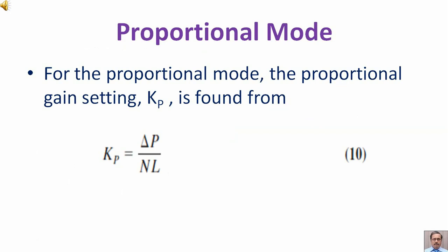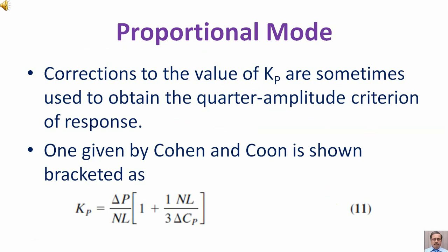Proportional mode: For the proportional mode, the proportional gain setting K subscript P is found from equation 10 as shown. Correction to the value of K subscript P are sometimes used to obtain the quarter amplitude criteria of response. One given by Cohen and Kuhn is shown as in equation 11. This correction is introduced by Cohen and Kuhn.